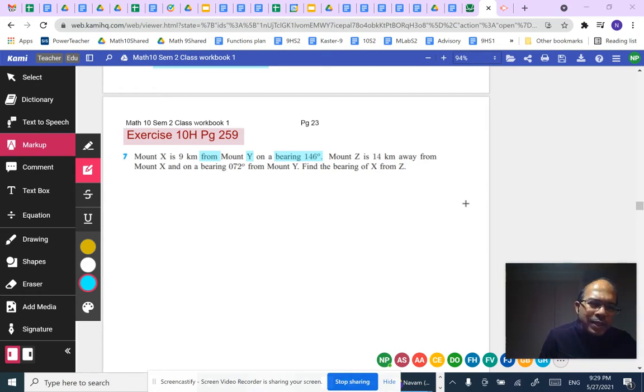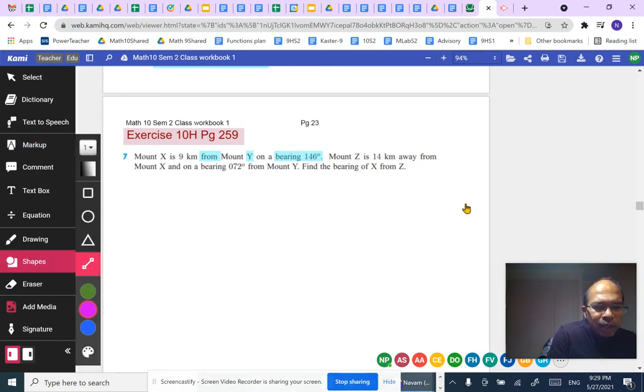It's important to understand that the bearing of 146 degrees is from Mount Y onto Mount X. So when we start drawing, we need to start with Y. It's useful always to draw a set of perpendicular lines to represent the north, south, and east-west directions like this.